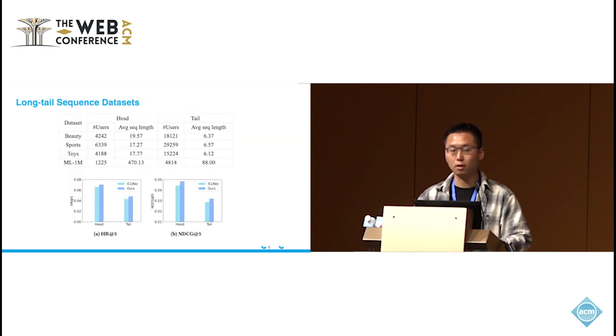We conduct the experiments on four benchmark sequential datasets. The average length of the head sequences in these datasets is significantly longer than the tail sequences. This exhibits long-tail characteristics.